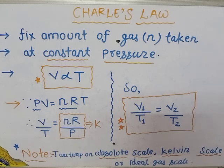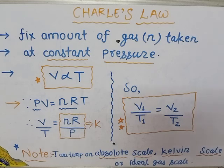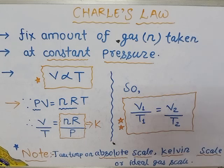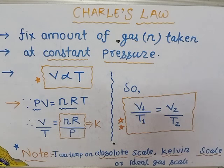So listen very carefully. What is the statement? For a fixed amount of gas at constant pressure, the volume occupied by the gas is directly proportional to the temperature of the gas on the absolute scale of temperature. Absolute scale of temperature means temperature taken in the Kelvin scale, also called the ideal gas scale.